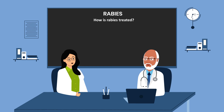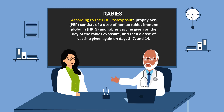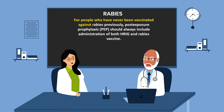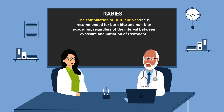How is rabies treated? According to the CDC, post-exposure prophylaxis consists of a dose of human rabies immune globulin (HRIG) and rabies vaccine given on the day of the rabies exposure, and then a dose of vaccine given again on days 3, 7, and 14. For people who have never been vaccinated against rabies previously, post-exposure prophylaxis should always include administration of both HRIG and rabies vaccine. This combination is recommended for both bite and non-bite exposures regardless of the interval between exposure and initiation of treatment.